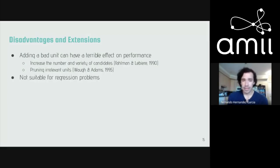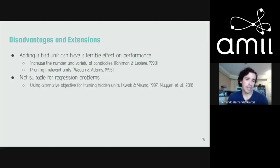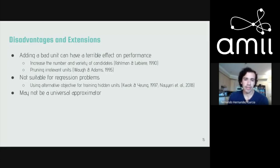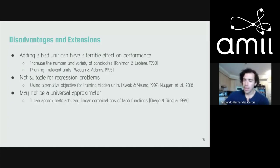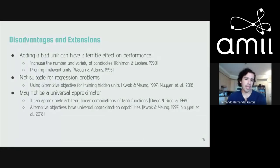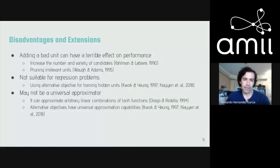People also pointed out that cascade correlation is not suitable for regression, but many modifications and alternative training objectives for the hidden units have been proposed to address this. Finally, there were concerns about whether this still results in a universal approximator — one of the main appeals of deep neural networks. Theoreticians have shown that cascade correlation can approximate a reasonable number of functions, and the alternative objectives proposed do result in a universal approximator.